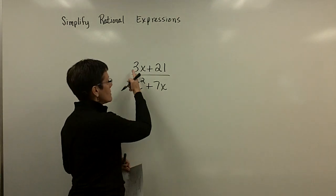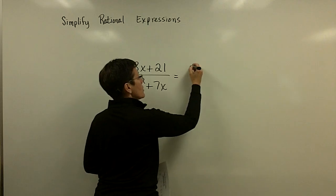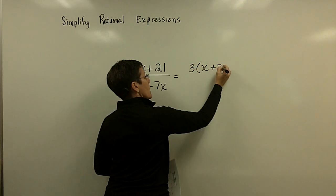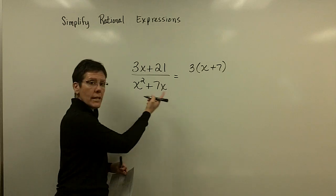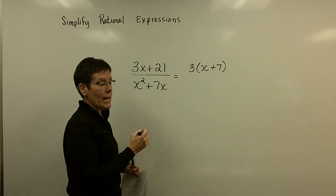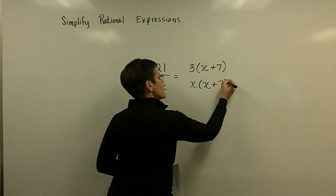So let's always pause to see if there's a greatest common factor that can come out of those. And sure enough, there's a 3 that comes out of that numerator, and then I need that binomial, x plus 7. And down here, there's a common factor of an x. And so I'm going to take out that x, and I'll need an x plus 7.